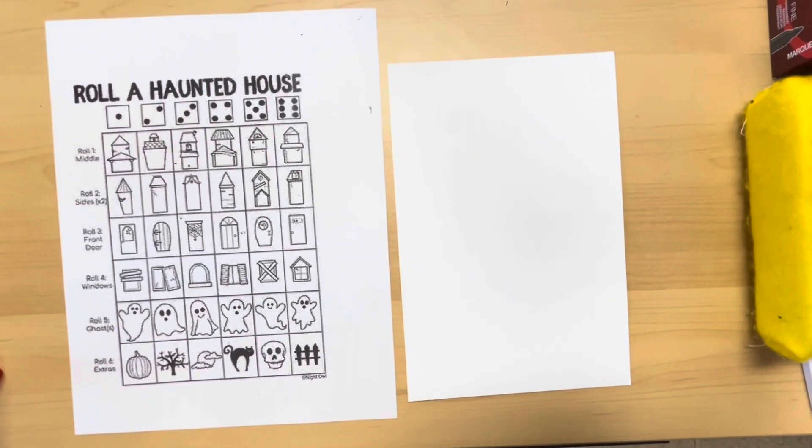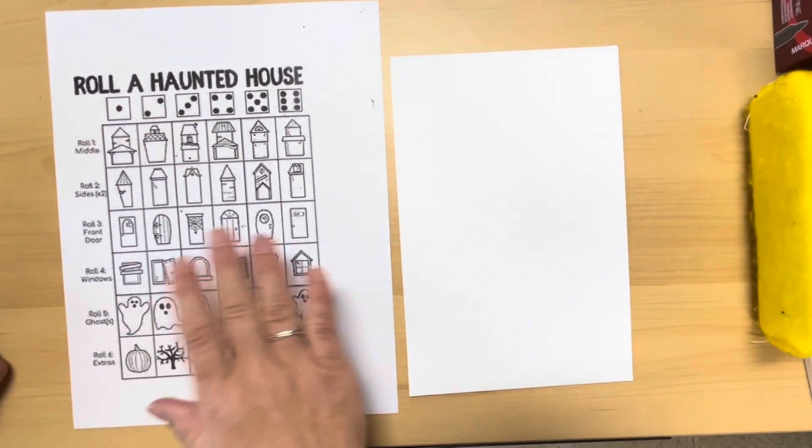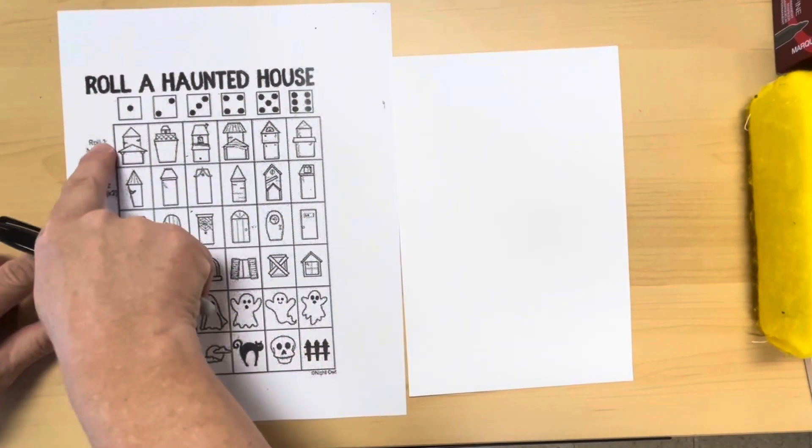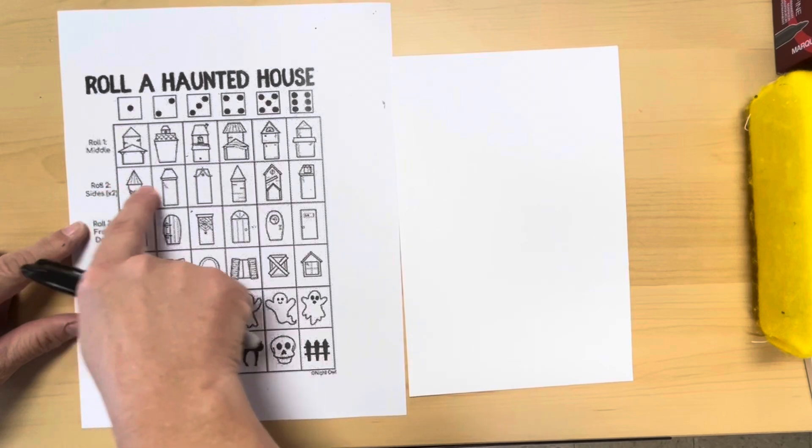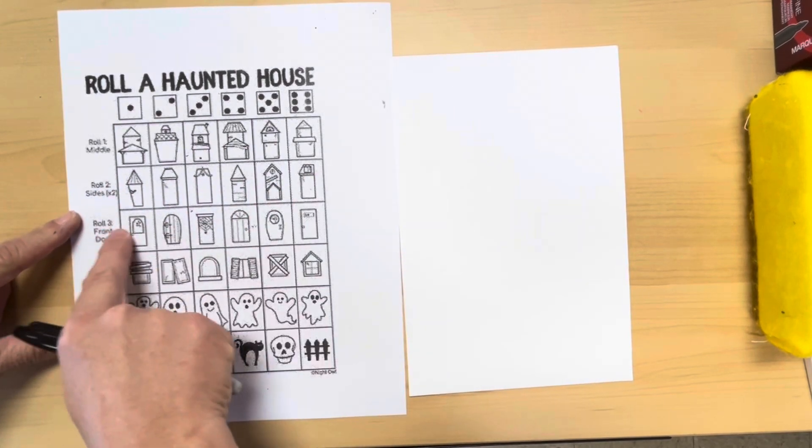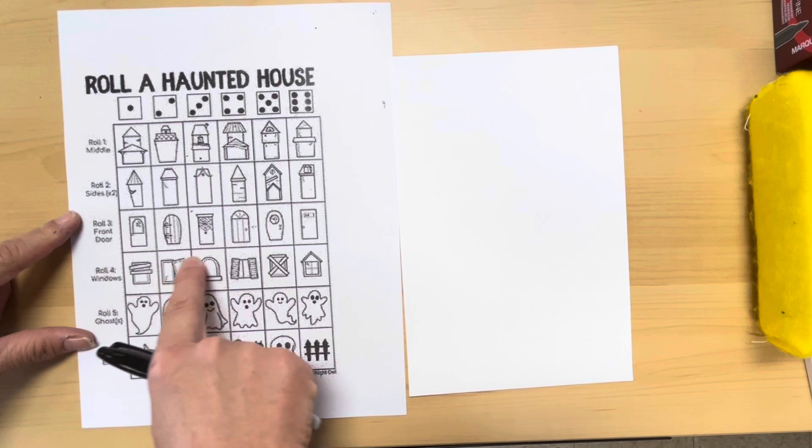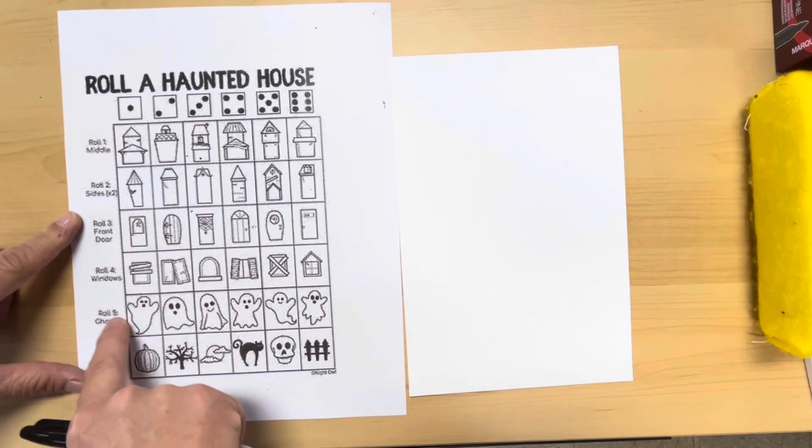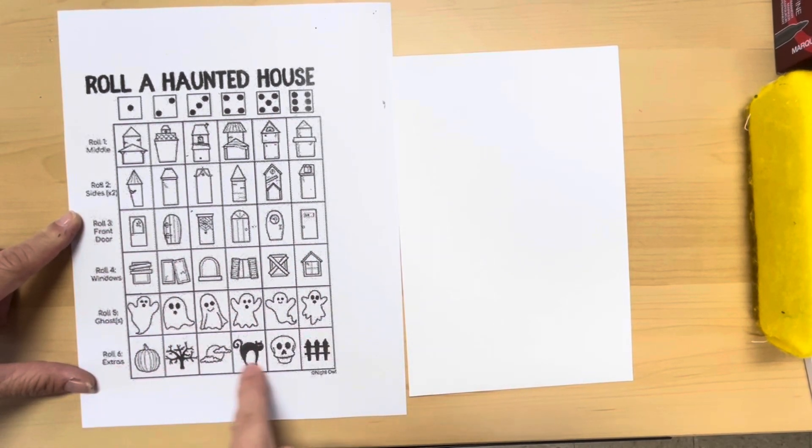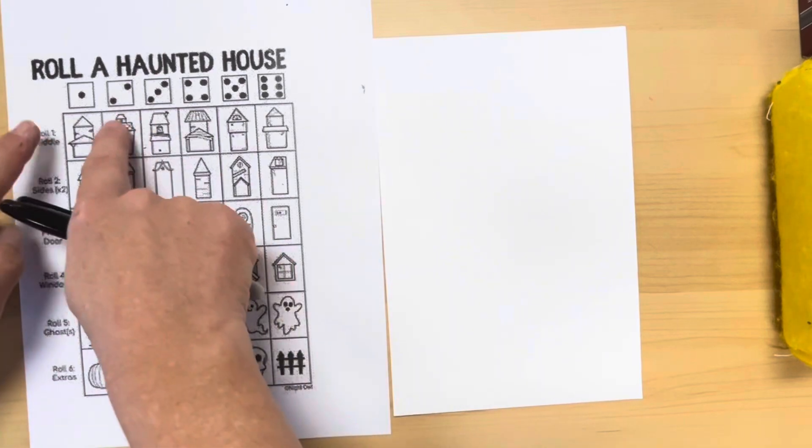Roll a haunted house. To play the roll of games we have several turns. Turn one is the house, two towers, three the door, four is drawing windows, turn five is ghosts, and other spooky stuff is roll six.